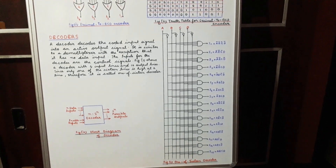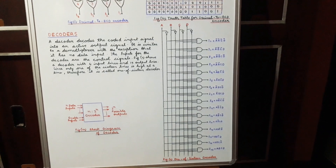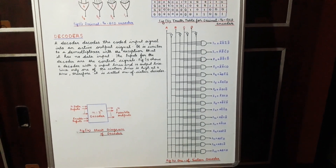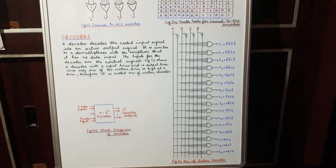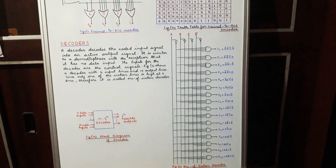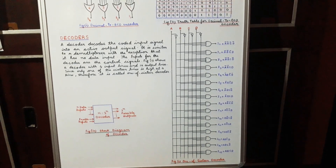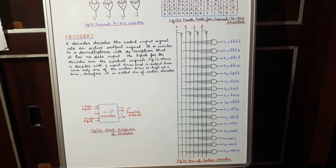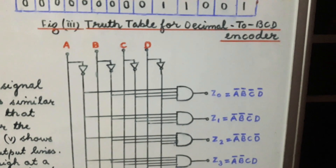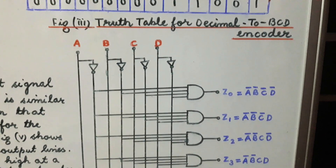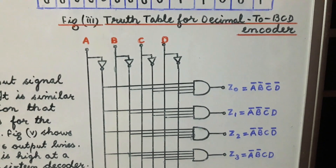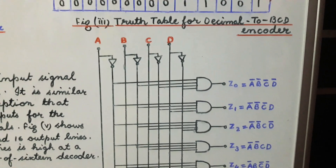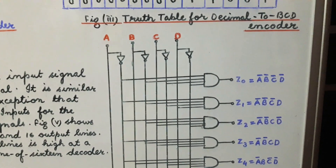In a similar manner, if we press switch 6, the BCD output will be 0110. If we press switch 8, the output B4 B3 B2 B1 will be 1000. 1001 in BCD is equivalent to decimal 9, and 0110 in BCD is equivalent to decimal 6.